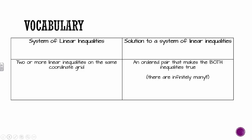Remember, the word system just means two or more of something. So this time we have inequalities on the same coordinate grid, the ones that we are going to shade in. And a solution to one of these is any ordered pair that makes both inequalities true. And the awesome thing about this is there's infinitely many of them.